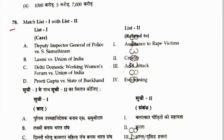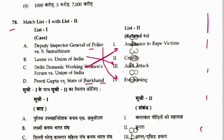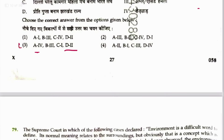Question 78: Match cases — Deputy Inspector General of Police vs. S. Samuthiram is on eve teasing. Laxmi vs. Union of India is on acid attack. Domestic Working Women Forum vs. Union of India is on rape victims. Prithi Kutra vs. Siddharth Khand is on cruelty. Sequence is 4, 3, 1, 2. Answer is 3.